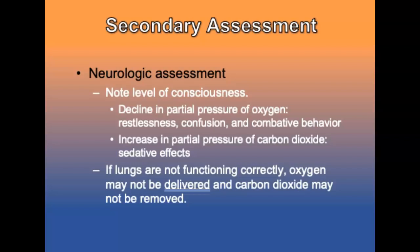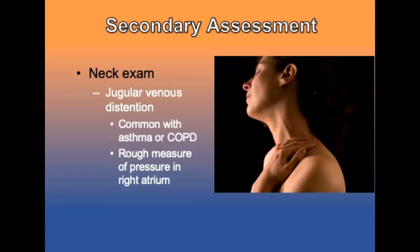In the secondary assessment, perform a neurological assessment and note the level of consciousness. If the lungs are not functioning correctly, oxygen may not be delivered to the bloodstream and carbon dioxide may not be removed. Perform a neck exam and note any jugular vein distension — a condition where the jugular veins are engorged with blood — common in patients with asthma, COPD, and may indicate cardiac failure as the source of dyspnea. It can be caused by cardiac tamponade, pneumothorax, or heart failure.